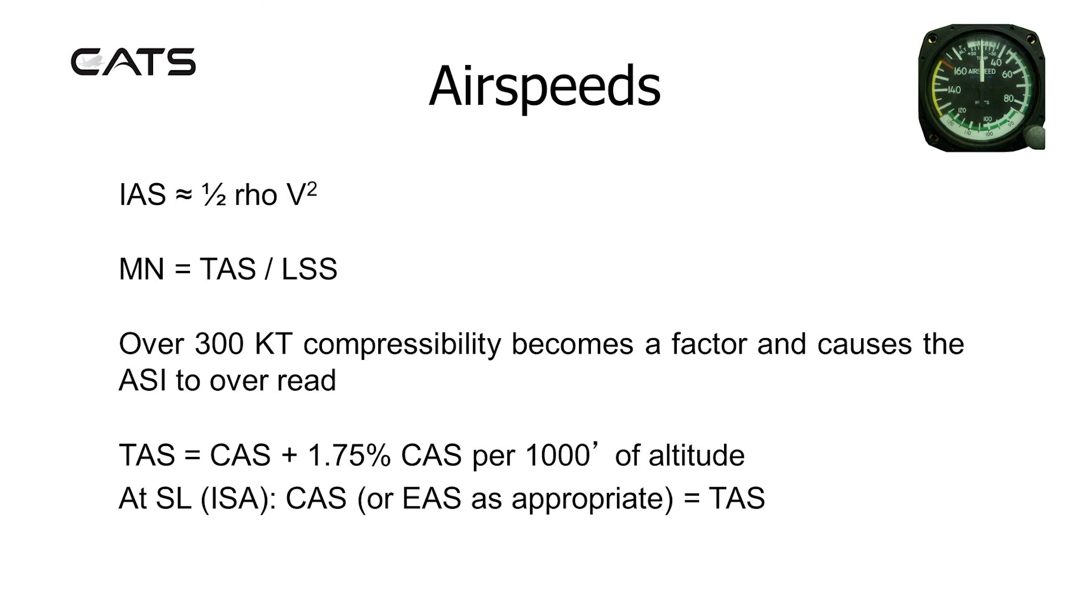Mach number equals TAS over local speed of sound. Over 300 knots, compressibility becomes a factor and causes the ASI to over-read. And there's a simple rule of thumb for this. The true airspeed will increase on top of the value of the calibrated airspeed by 1.75% of the calibrated airspeed per 1000 feet of altitude. At sea level, ISA conditions, calibrated airspeed or equivalent airspeed equals TAS.